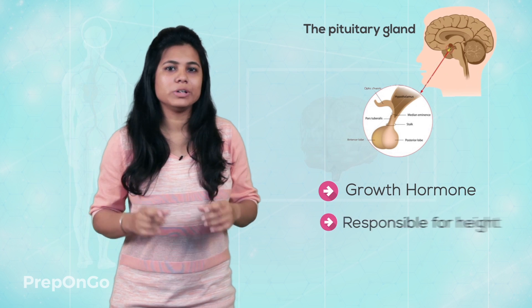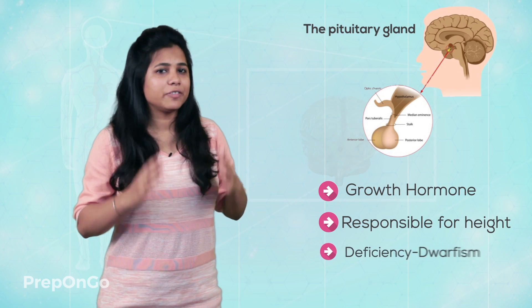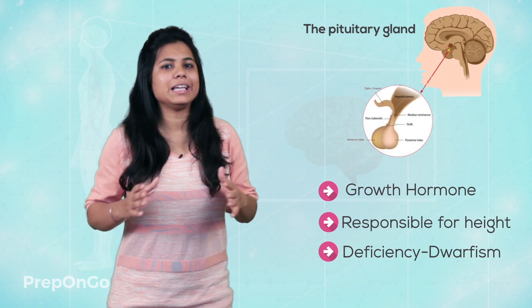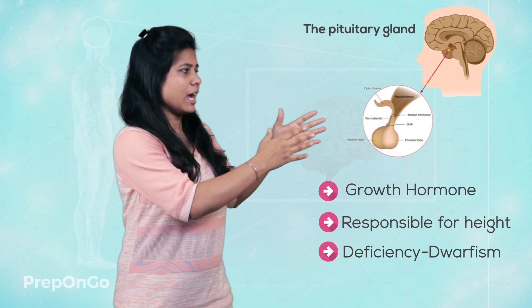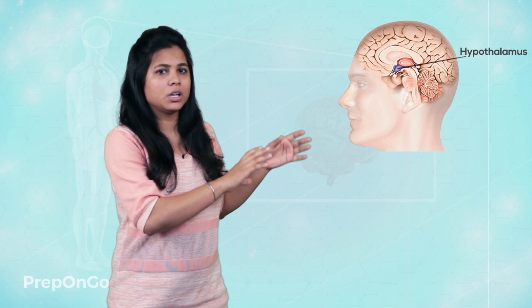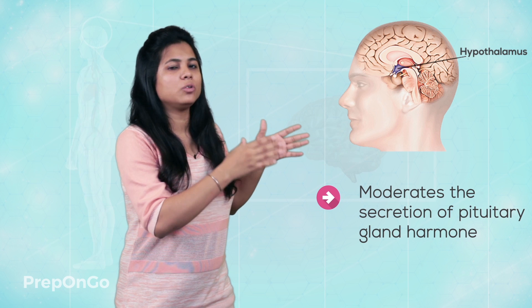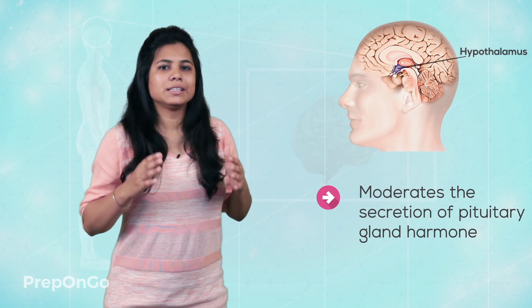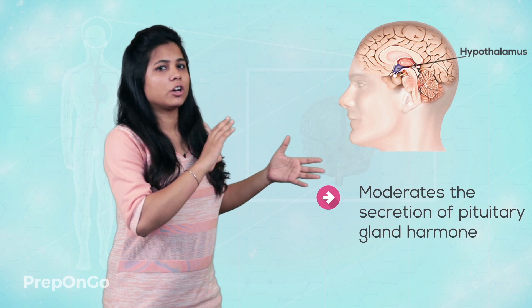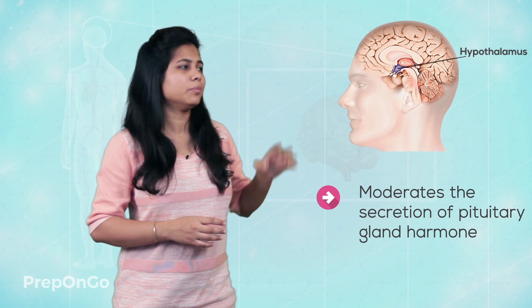The growth hormone is responsible for the height of a human being. Deficiency of this hormone can lead to dwarfism. Near to the pituitary gland is the hypothalamus gland. This hypothalamus gland controls the amount of pituitary gland hormone that has to be secreted — it governs or guides the amount of hormones that have to be secreted by the pituitary gland.